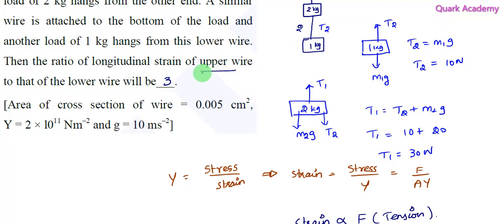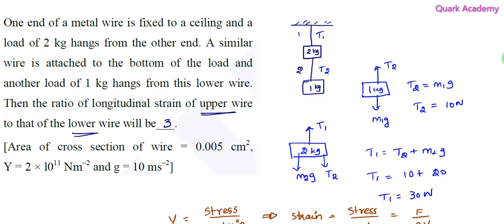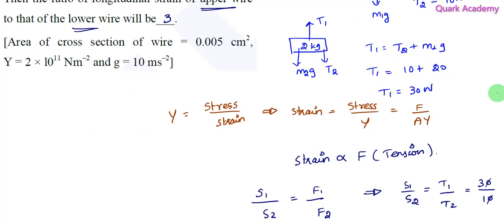This is the upper wire to that of the lower wire. The upper wire is 1 and the lower wire is 2, so the ratio is 3.